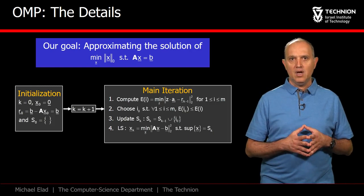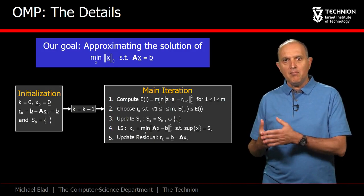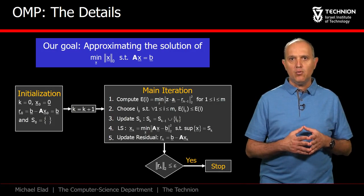This is a simple least squares process, and its result is an updated xk. Our last step is to update the residual Rk to be B minus A times xk.